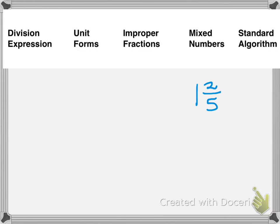In this equation, they're giving you the mixed number of 1 and 2/5. We have to figure out what the improper fraction is, what the unit form is, what the division expression is, and then check it using the standard algorithm.